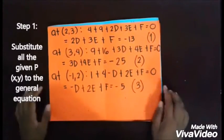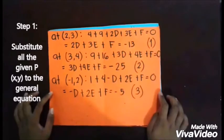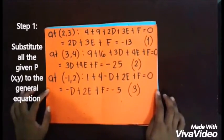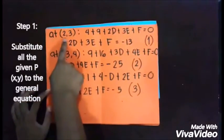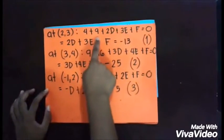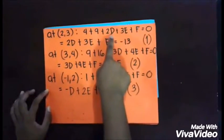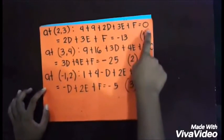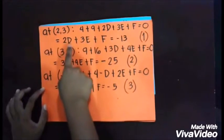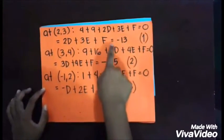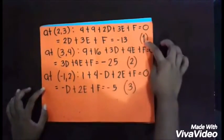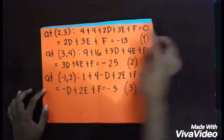We have to substitute all the values of x and y in the general equation. At point (2, 3): 4 + 9 + 2d + 3e + f = 0, which gives 2d + 3e + f = -13. This is Equation 1.